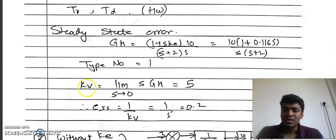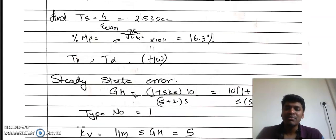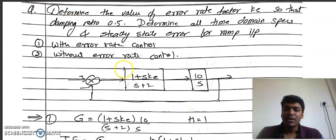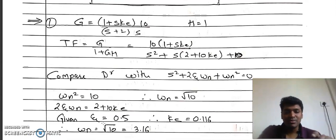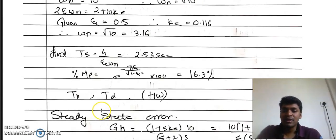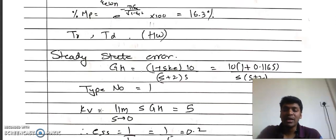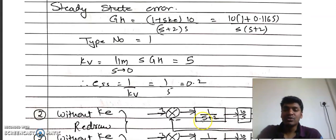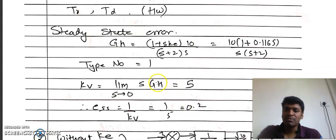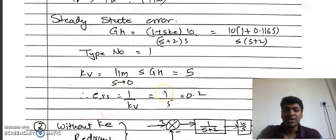The steady state error for ramp signal is ESS = 1/Kv = 1/5 = 0.2. So the error is only 0.2. This was the solution to this problem — we found all the parameters and the steady state error when the input was a ramp signal.